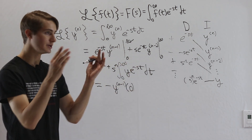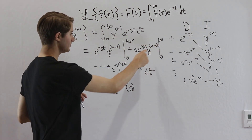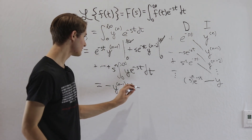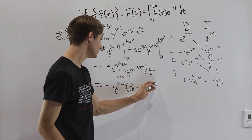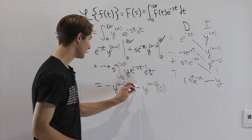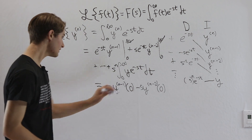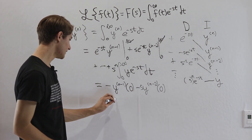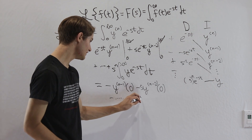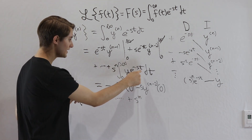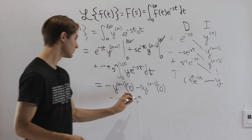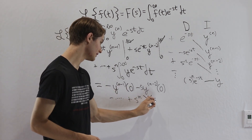For the next term, it's exactly the same — as t goes to infinity, that part goes to 0, and we're left with a minus times the (n−2)th derivative of y at 0, multiplied by s. We keep doing this. And then at the very end, we have plus s to the n times the integral of y times e to the negative st from 0 to infinity — that's just the Laplace transform of y, which we'll call big Y of s.